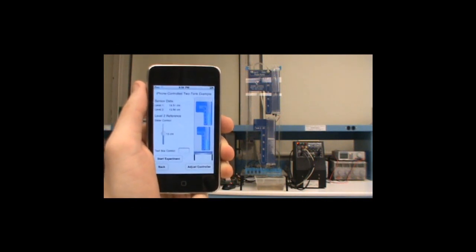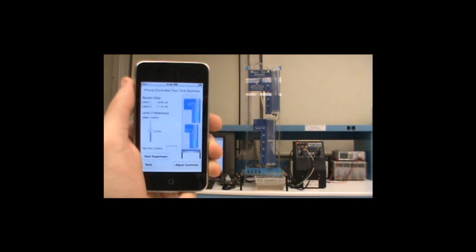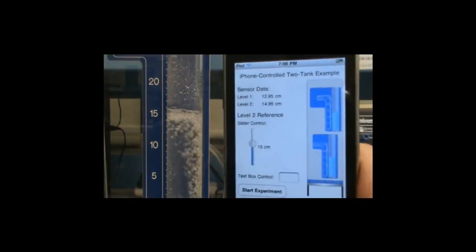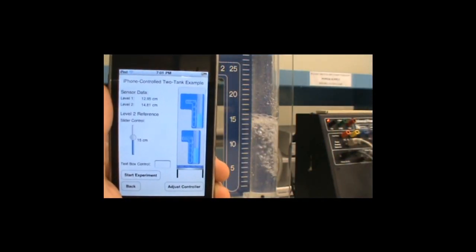Notice that not only do labels in the mobile application update with the current values of the water level in each tank, but the animation on the side updates as well with its levels mimicking the current state of the experiment.